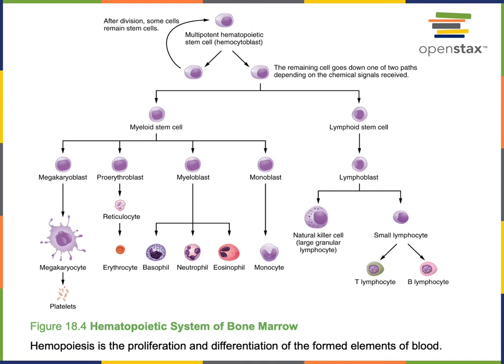Proerythroblasts are the immature cells that differentiate into reticulocytes, which then mature into erythrocytes. A myeloblast is a stem cell that can differentiate into any of the granulocytes — basophils, neutrophils, or eosinophils. A monoblast is an immature cell that can mature into a monocyte. Monocytes can travel through the blood helping to defend against infection, and when a monocyte leaves the blood and enters another tissue, it can differentiate into a macrophage.